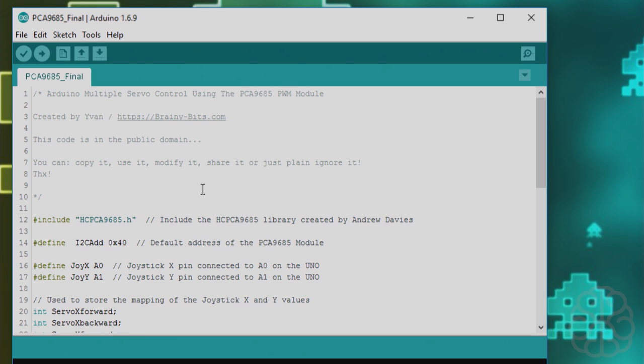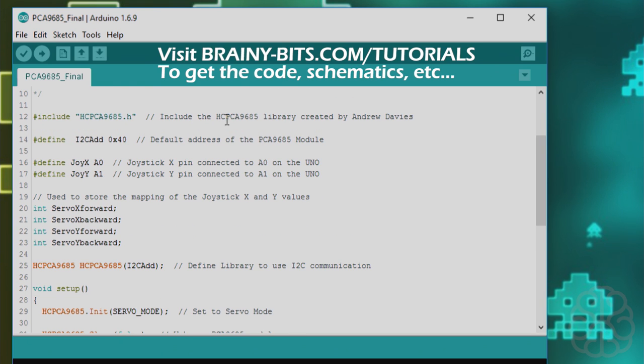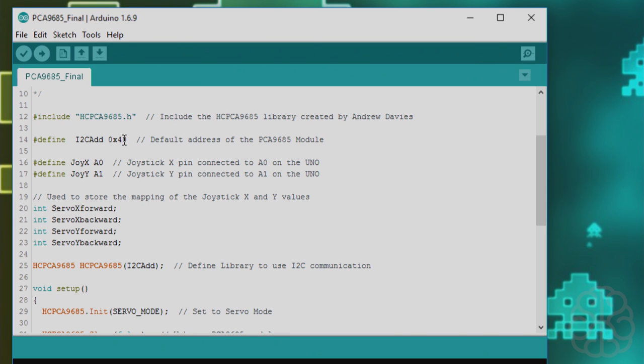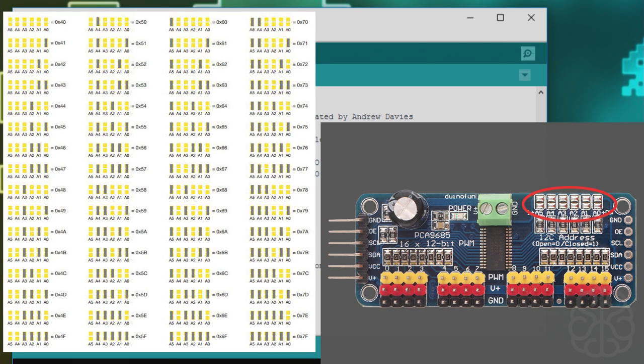Here's the code we're going to use today. We're including the library right here and we're defining the address, the i2c address. Each one of those PCA9685 modules come with a default address of 0x40. If you look at the image on the screen right now, you can change that address by removing some of the resistors here to change the address if you want to link a couple of them together.